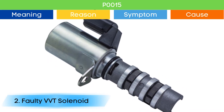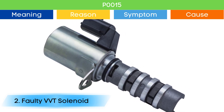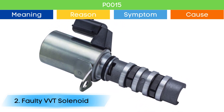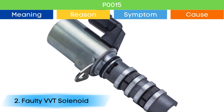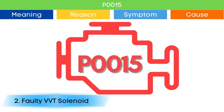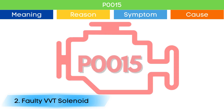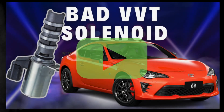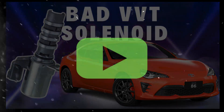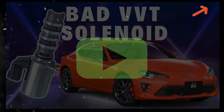Cause number two: bad VVT solenoid. Due to a bad VVT solenoid, the camshaft position advance and delay may not work properly, which may trigger P0015 and other OBD-II codes related to the VVT solenoid, along with symptoms of a bad VVT solenoid. Check our detailed video to learn more about the symptoms of a bad VVT solenoid and related OBD-II codes — link in the corner.